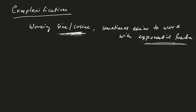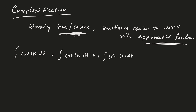Suppose for example that I want to integrate cosine of t. Now that's easy enough that you wouldn't actually change this problem, but you could embed this problem into a larger problem. Instead of integrating just cosine of t, you could integrate cosine of t plus i times the integral of sine of t, getting both integrals simultaneously. Because the integral is linear, I can rewrite that as the integral of e^(it) dt.